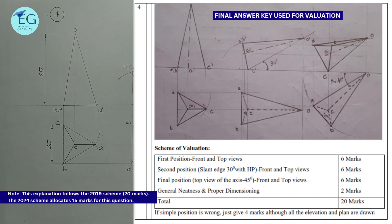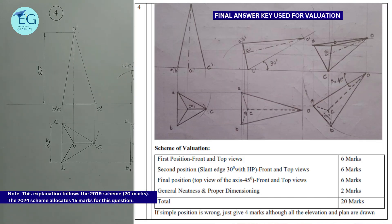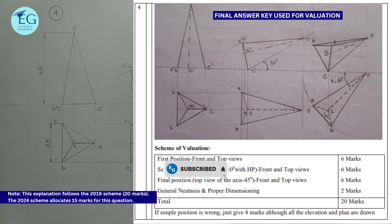In the first stage, the front view earns six marks. The second stage front view earns six marks, the third stage earns six marks, and neatness with proper dimensioning earns two marks.